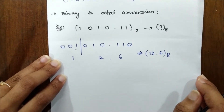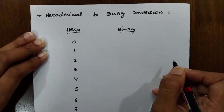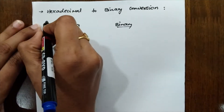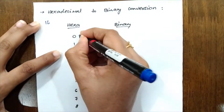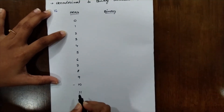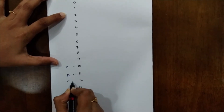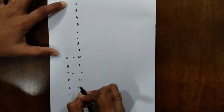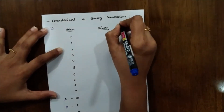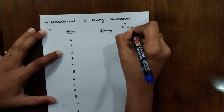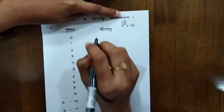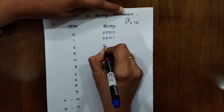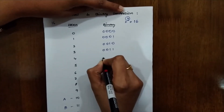Now let's get into hexadecimal to binary conversion. Hexadecimal uses four bits because its base is 16, and 2⁴ equals 16. It uses digits from 0 to 15, where the digits 10 to 15 are represented using letters A to F. Never use the digits 10 to 15 directly — use the notations A to F. So 0 is written as 0000 and 1 is written as 0001.